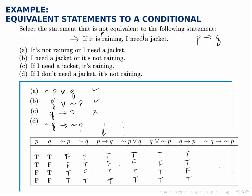Then lastly, not Q implies not P. We'll use not Q and not P and this will be true unless not Q is true and not P is false.